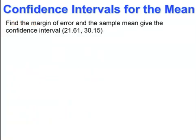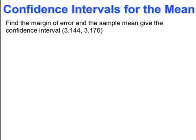Pause and try. You should have gotten a mean of 25.88 and an error of 4.27. Pause and try. You should have gotten a mean of 3.16 and an error of 0.016.